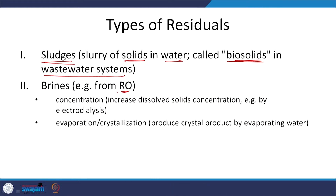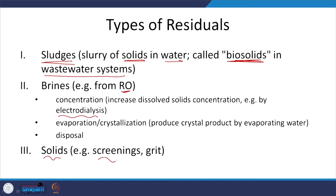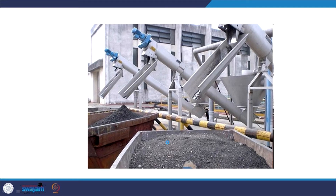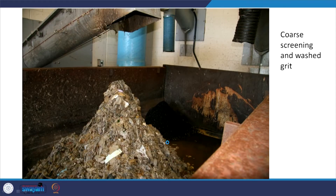This is a great disadvantage with RO — what do you do with this brine? Concentration — increased dissolved solid concentration, for example by electrodialysis. Evaporation or crystallization — produce a crystal product by evaporating water, and then disposal. Solids from screenings and grit — from preliminary treatment, we have the screw auger and then the grit washing chamber. Here you see an example of coarse screens and then washing grit. This is relatively more inert — different kinds of disposal. This will not go into any composting techniques.